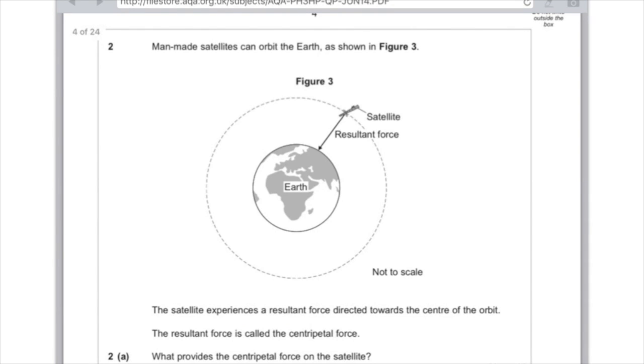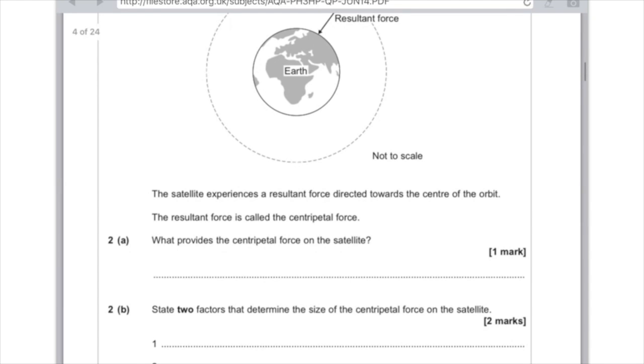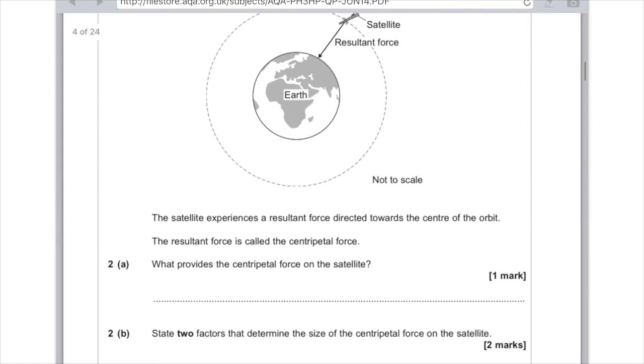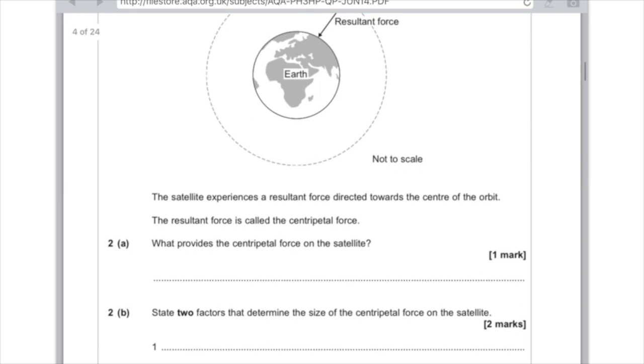Question 2. Man-made satellites can orbit the Earth, as shown in Figure 3. The satellite experiences a resultant force directed towards the centre of the orbit. The resultant force is called the centripetal force. What provides the centripetal force on the satellite? Well, it's not going to be friction like before with the car example we just looked at. This time, it's going to be due to the gravitational attraction between the satellite and the Earth, or just write gravity, if you prefer. And all that is, remember, is gravity keeps satellites and moons and things orbiting around their planets. And in that case, therefore, we need to talk about gravity here.